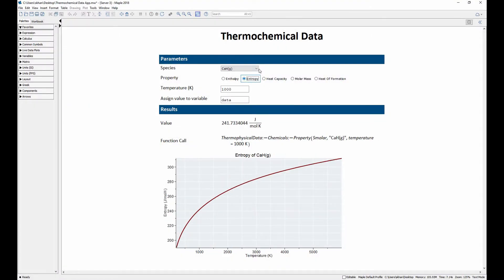Maple 2018 enhances the existing tools for computing thermodynamic properties with thermochemical data for an additional 2000 solids, liquids and gases.